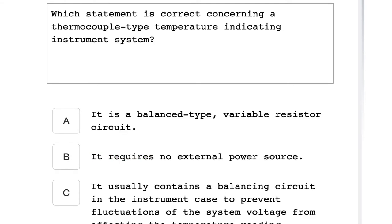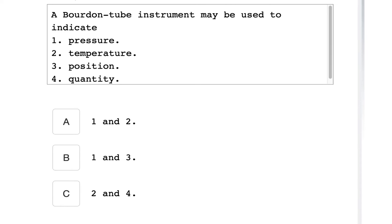Which statement is correct concerning a thermocouple type temperature indicating instrument system? It requires no external power source. A Bourdon tube instrument may be used to indicate: one, pressure; two, temperature; three, position; and four, quantity. It indicates pressure and it also indicates temperature.